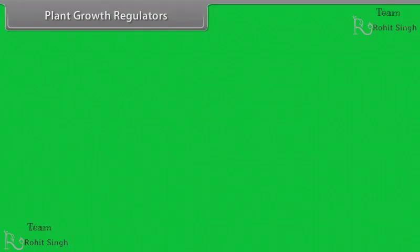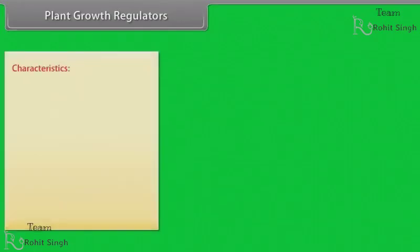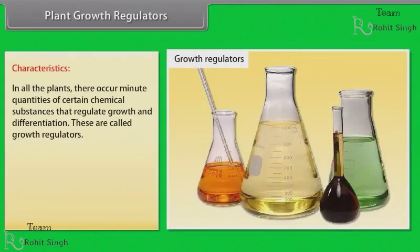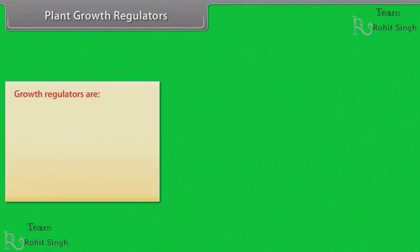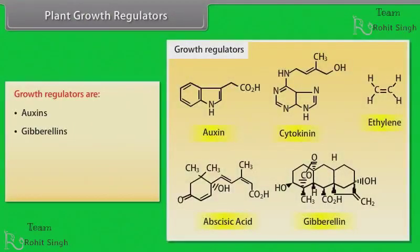In all plants, there occur minute quantities of certain chemical substances that regulate growth and differentiation; these are called growth regulators. A growth regulator may be defined as an organic substance produced naturally in plants, controlling growth and other functions at a site remote from its place of production, in minute quantities. These are auxins, gibberellins, cytokinins, ethylene and abscisic acid.